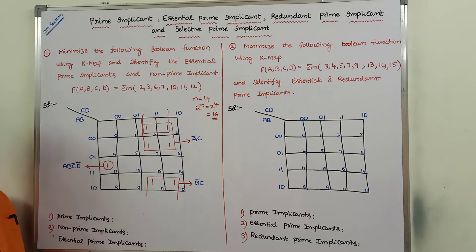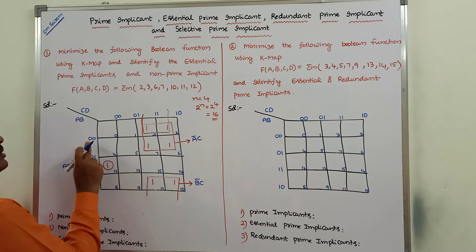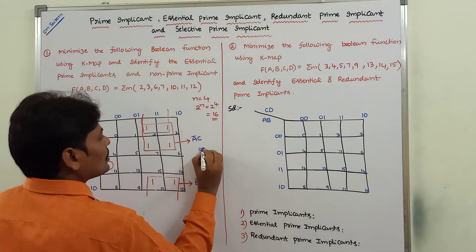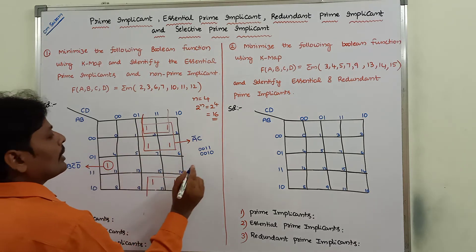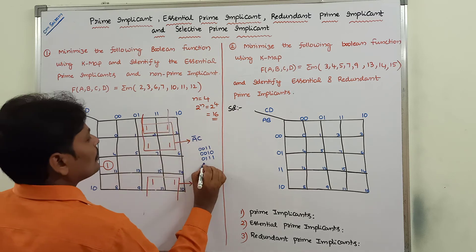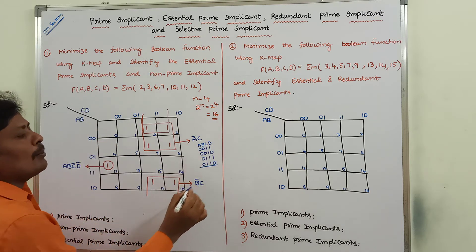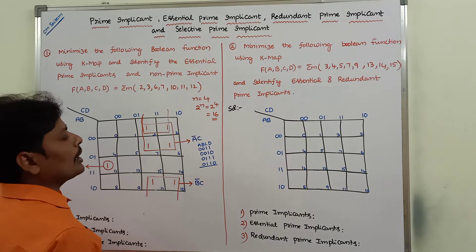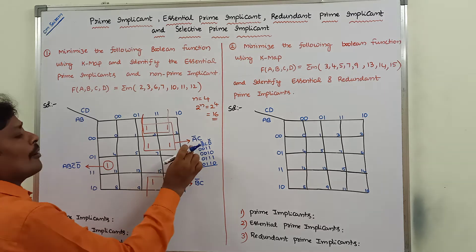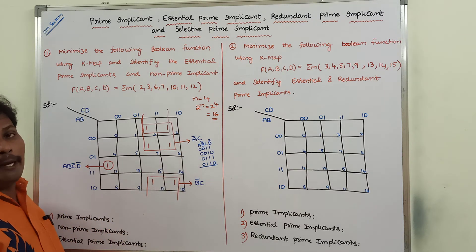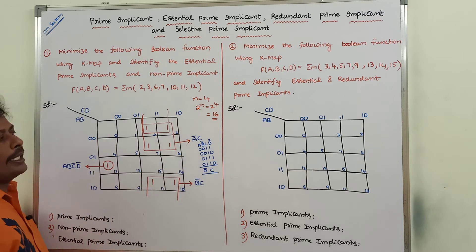For the first quad, I list the binary values for each cell: A, B, C, D. Any column that contains a combination of zeros and ones is ignored. The B column and D column are ignored. Only the A and C columns are considered: A column contains only zeros, C column contains only ones. A value 0 means A-bar; C value 1 means C. The expression obtained is A-bar C.